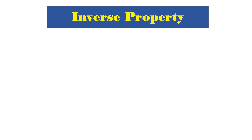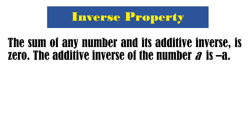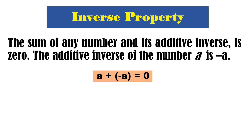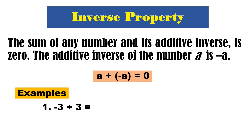Last is the inverse property. We have additive inverse and multiplicative inverse. The additive inverse: the sum of any number and its additive inverse is 0. The additive inverse of A is negative A. Kapag pinag-add natin yung number at yung additive inverse niya, the sum is 0. The other term is opposite — the opposite of positive A is negative A, and the opposite of negative A is positive A. So A plus negative A equals 0. Examples: negative 3 plus 3 is 0, and positive 7 plus negative 7 is 0.